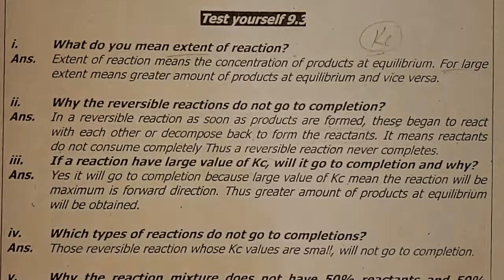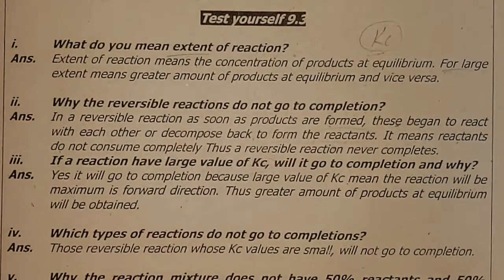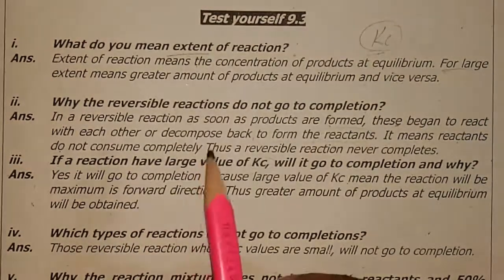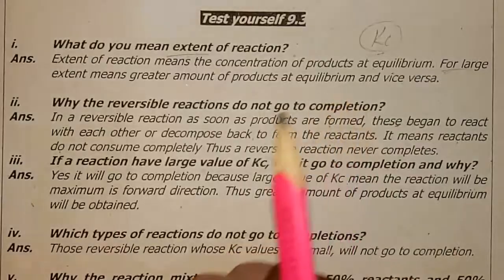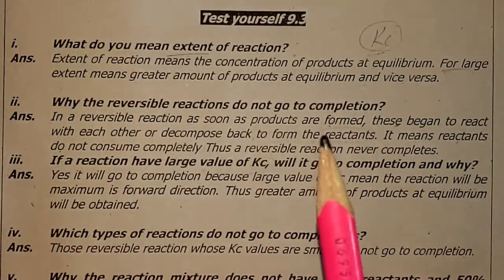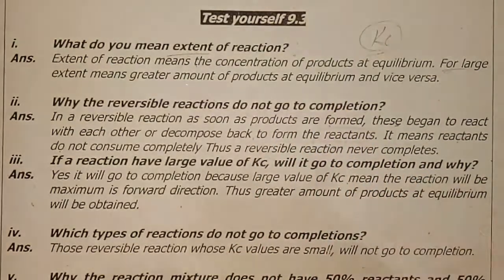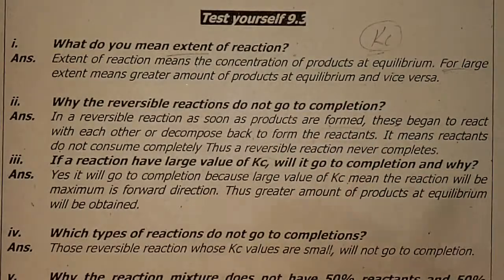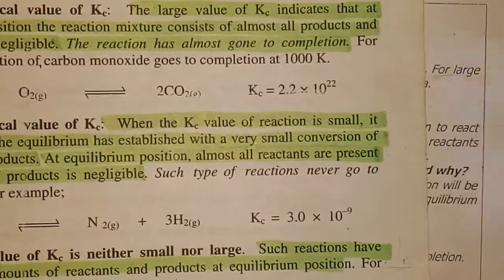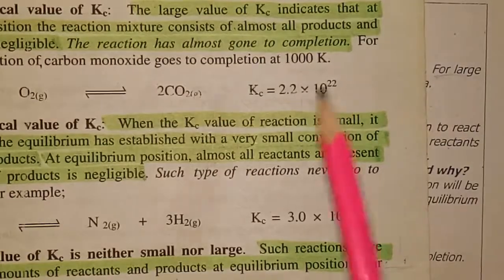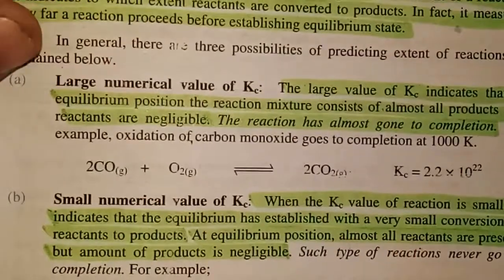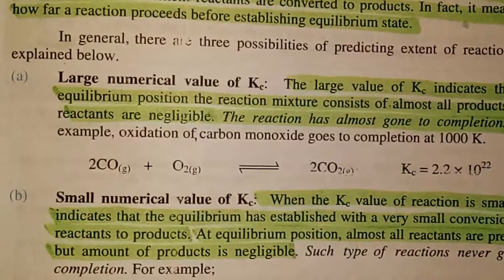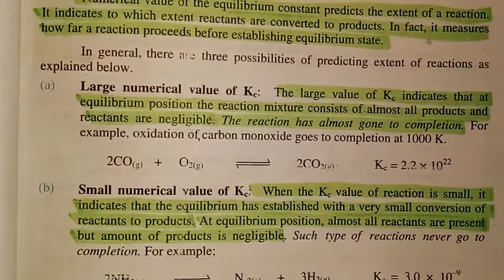A greater amount of products means the Kc value is large. In this case, the book gives some examples. You can see this is an example of the extent of reaction. Let me zoom out from this.